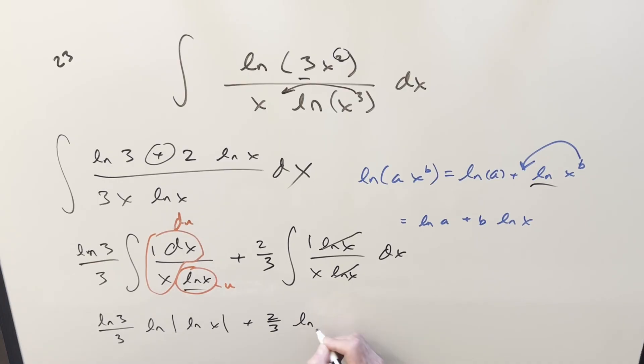Here, integrating this, we get natural log absolute value of x. Add a plus C onto it, and that's it.